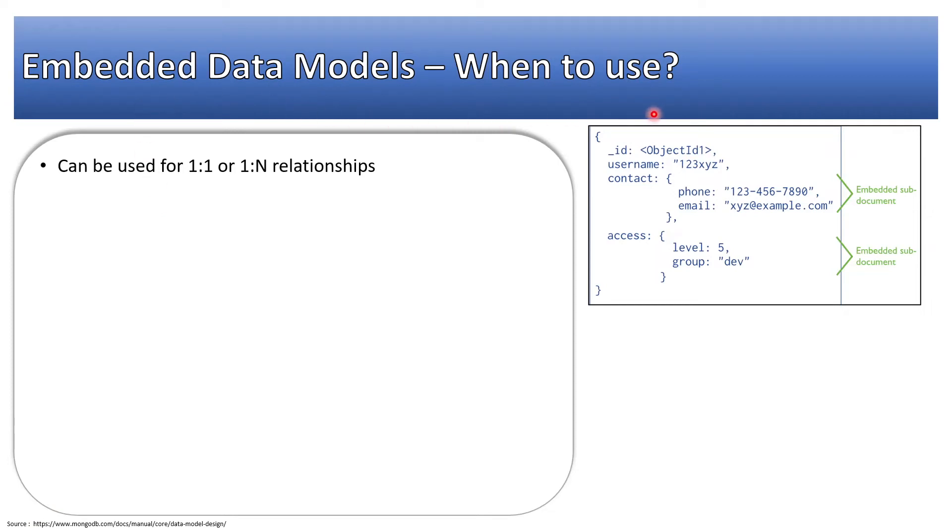Embedded data models, when to use? When there is relationship one-to-one or one-to-many relationships. On the right-hand side of the screen you can see this is embedded model. We have a user and we are supposing that one user will have one phone and one email, and access also we can have controlled. User will have one level of access or a user will have the access defined at a single level only. User will not have multiple records of access. We can manage those in a single document.